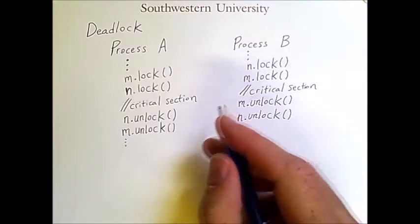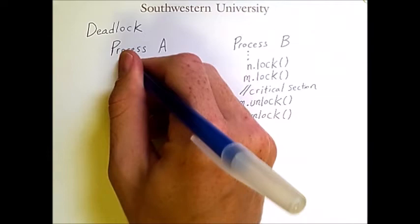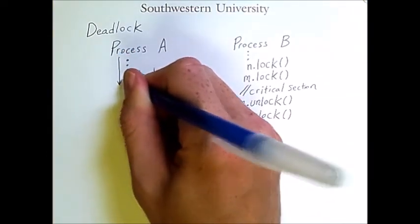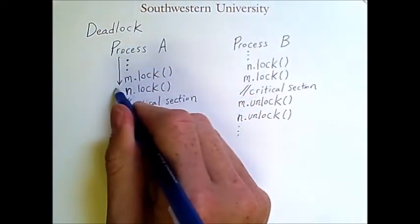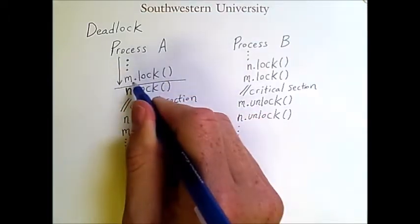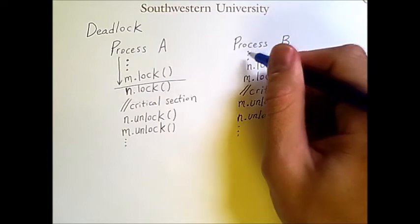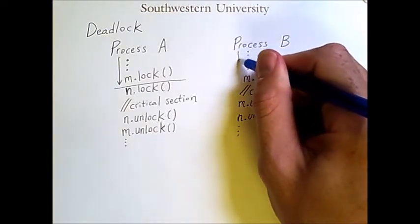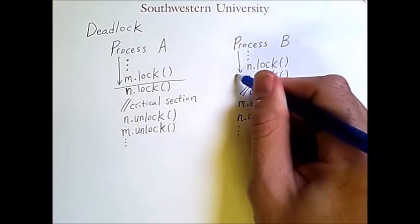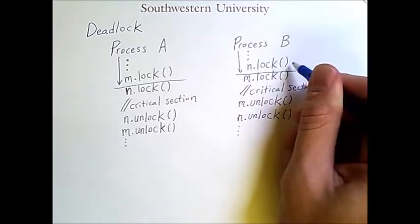What can happen is that this process progresses through this line of code, meaning that mutex M has been locked. Then process B goes through this line of code, meaning that mutex N has been locked.